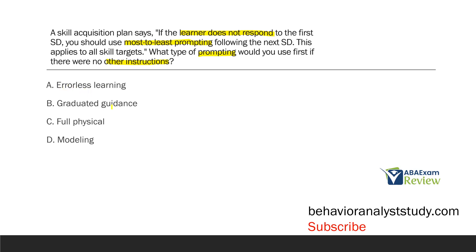Graduated guidance is the type of physical prompt where we use as much physical prompting as necessary and then fade it immediately. Full physical would come after errorless, but errorless is going to come first. Could you use full physical for errorless learning? You could, if that's what it takes to prevent mistakes. The best answer is still going to be errorless learning, even though you may use full physical within errorless learning. Modeling is a step below all of our physical prompts. So if we're going to use most to least prompting, we start with errorless learning.